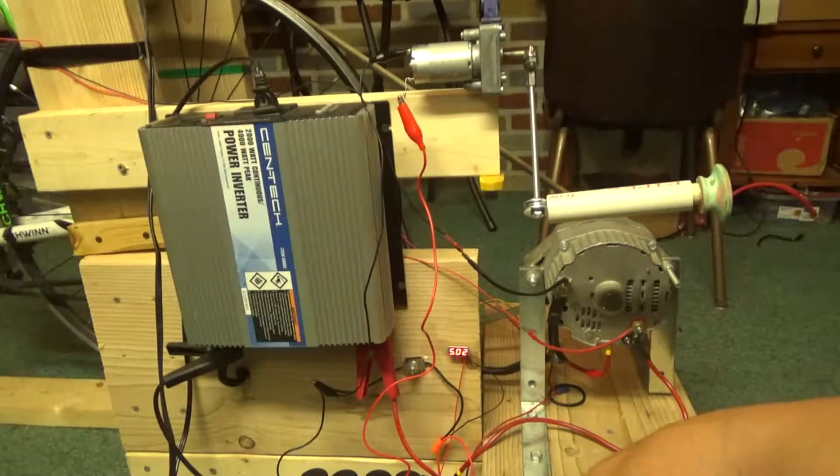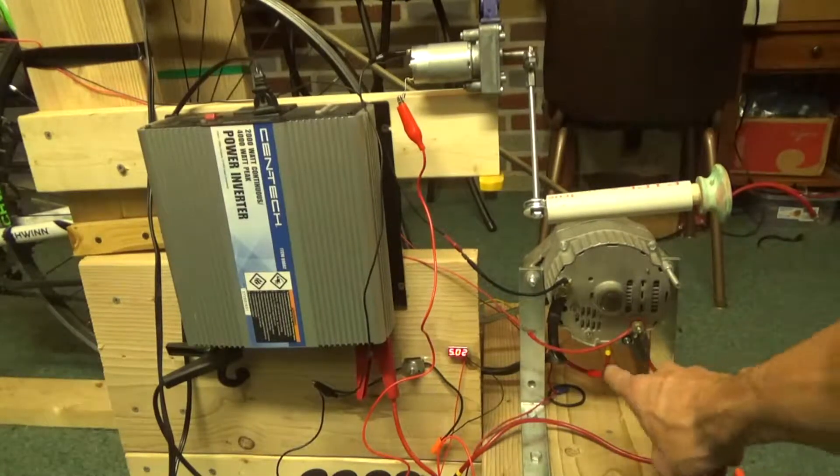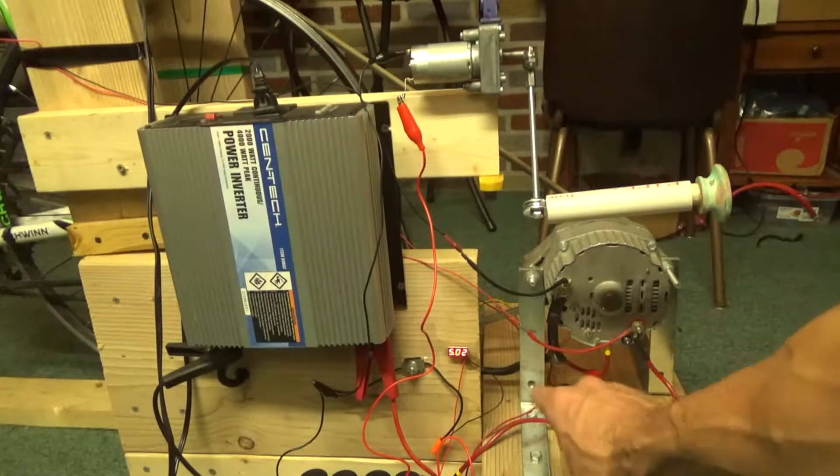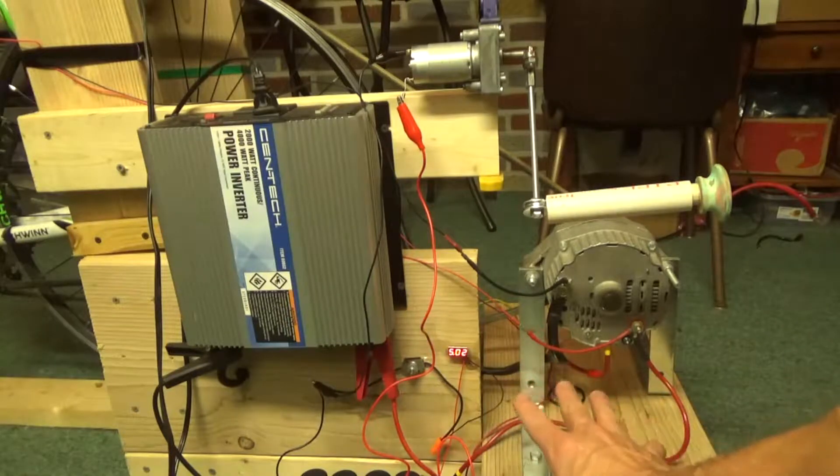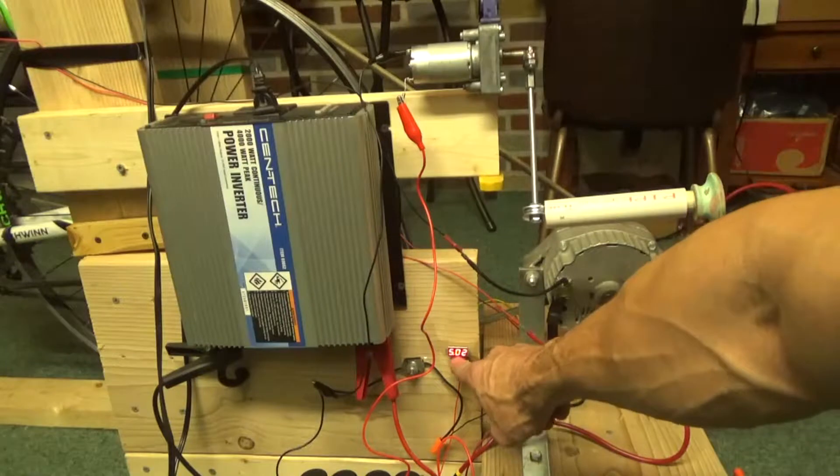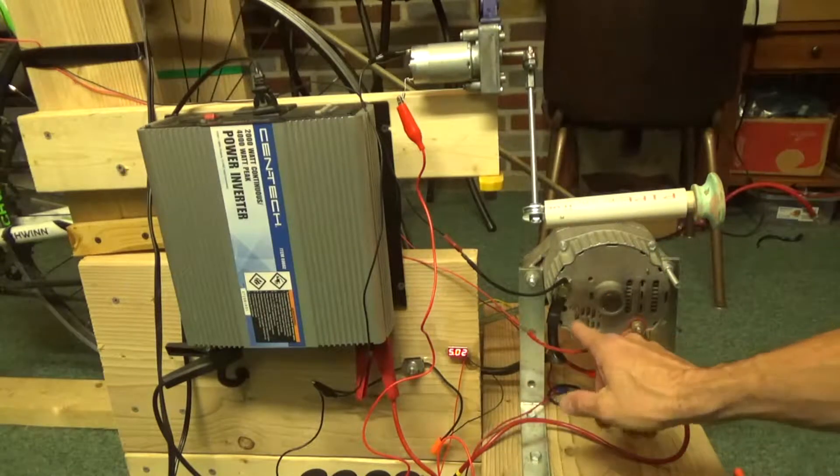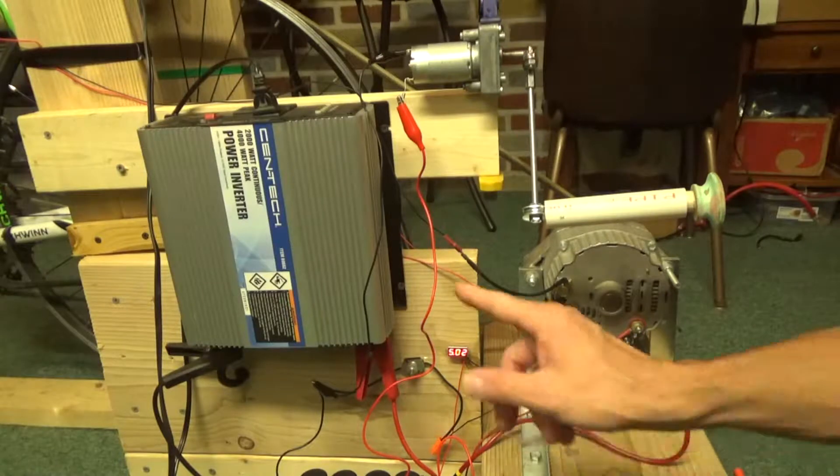So six volts on a super capacitor is enough current to kickstart this alternator. Before I had a 12 volt battery hooked up here. I want to try to make this whole thing without a battery. In an emergency situation all I have to do is hand crank this thing, get this voltage up about 5.5 volts to six volts and it's enough current to start this alternator up and I can just pedal to quickly charge this thing up.